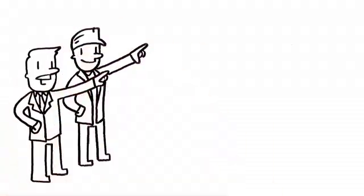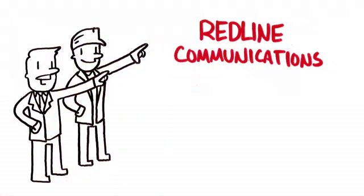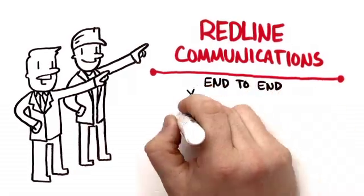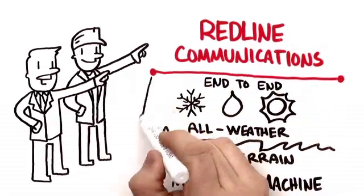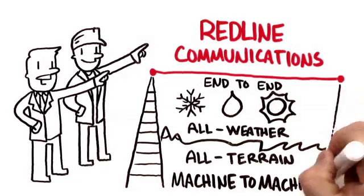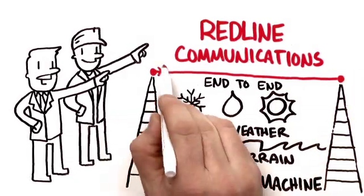Advanced oil and gas companies turn to Redline communications to deliver an end-to-end all-weather, all-terrain, machine-to-machine wireless network that turns a regular oil field into a wireless digital oil field.